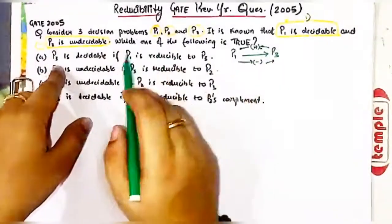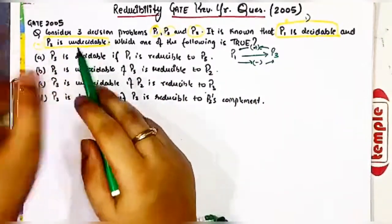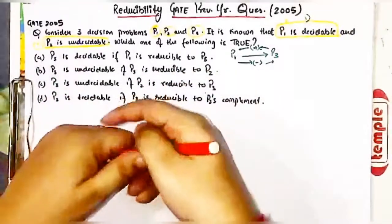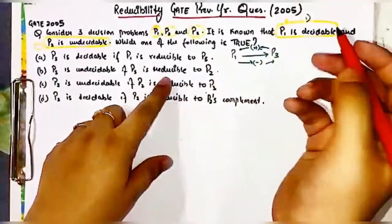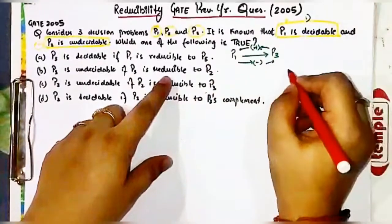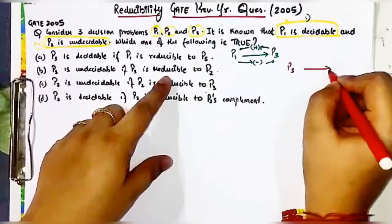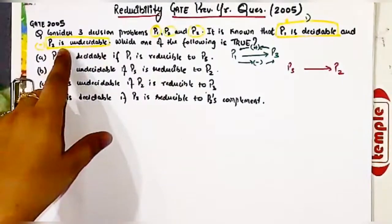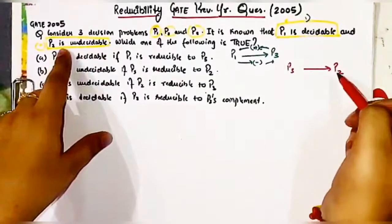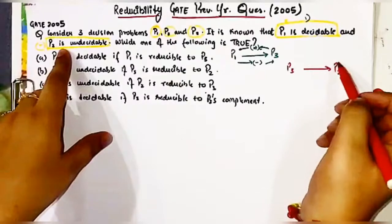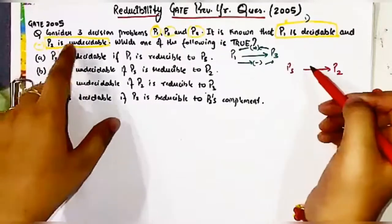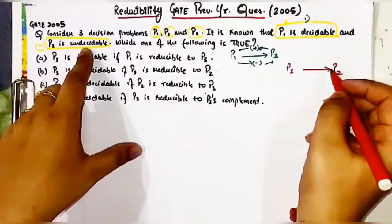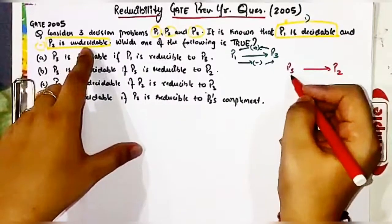For option B, it is given that P3 is reducible to P2, and P2 is undecidable. P2 will pass positivity towards P3 — but since undecidable is a negative thing, similarly we cannot say anything about P3 whether it will be decidable or undecidable. Hence this option is also not correct.